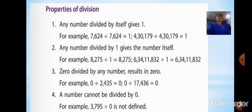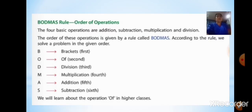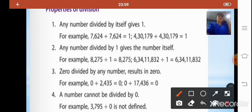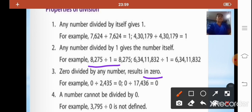Let us revise the properties of division. The first property: any number divided by itself gives 1. The second property: any number divided by 1 gives the number itself. The third property: 0 divided by any number results in 0. The fourth property: a number cannot be divided by 0 — it is not defined.